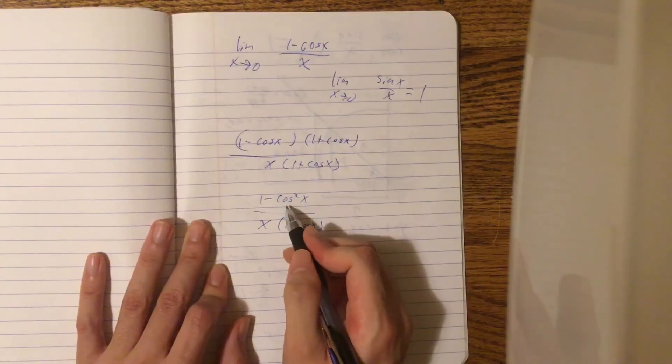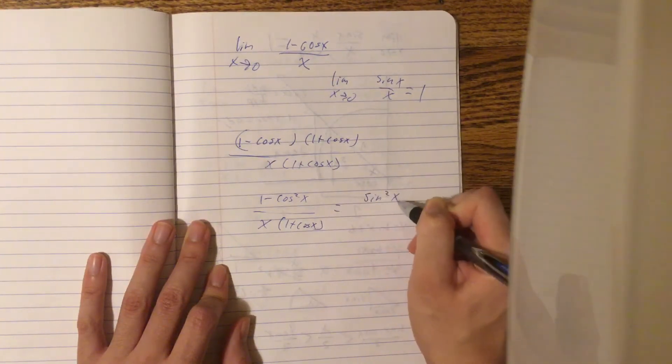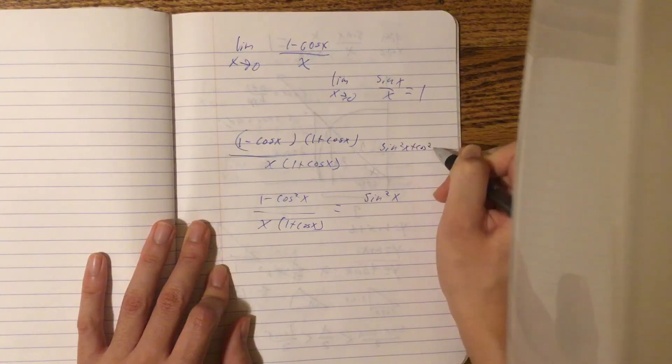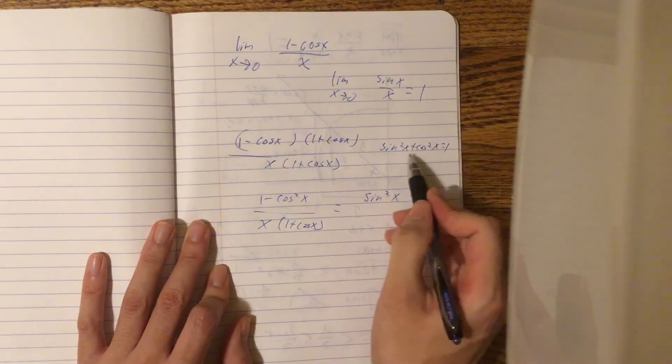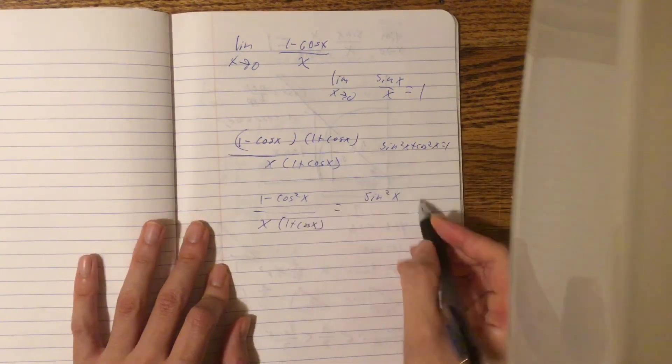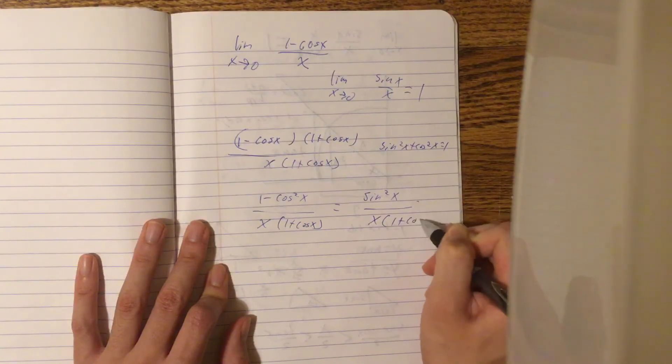But remember, 1 - cos²x also equals sin²x, from the identity sin²x + cos²x = 1. If you move cos²x to the other side, you get that over x(1 + cos x).